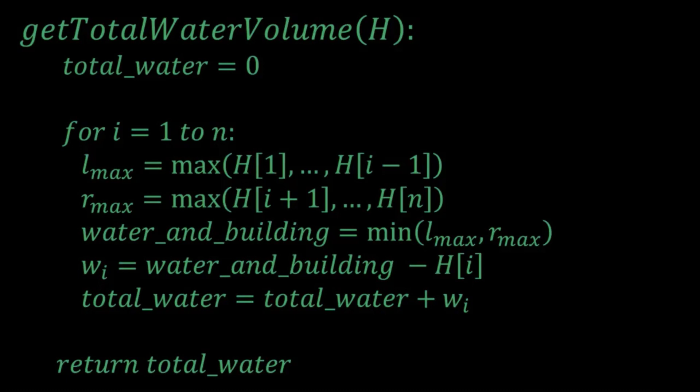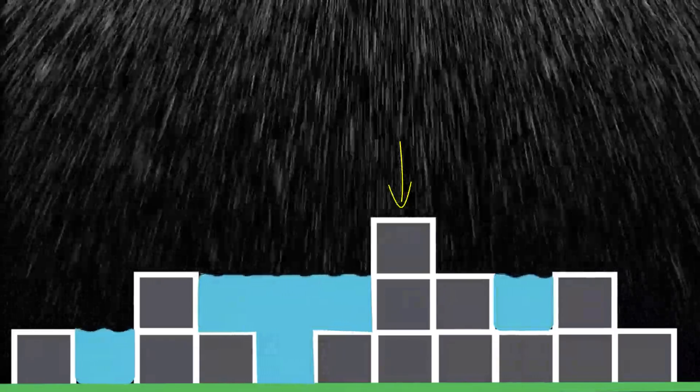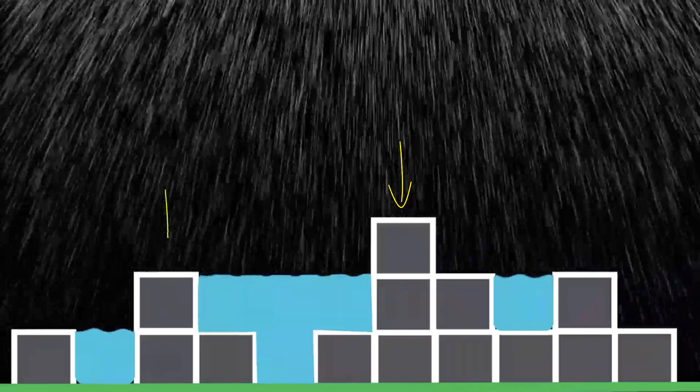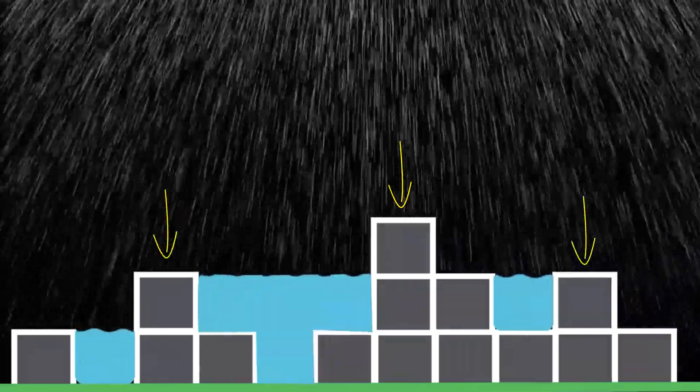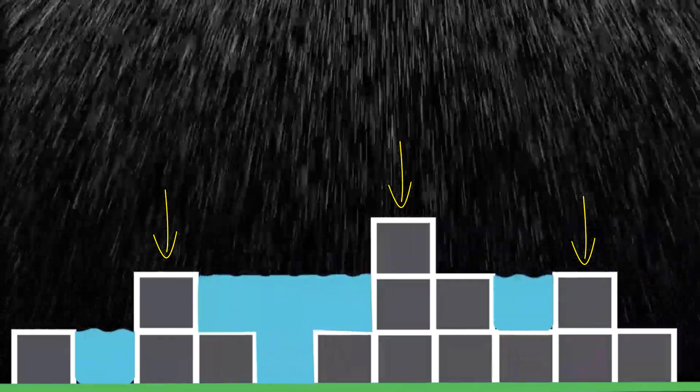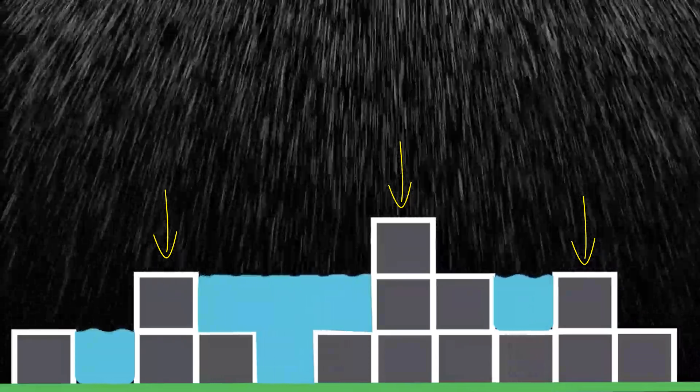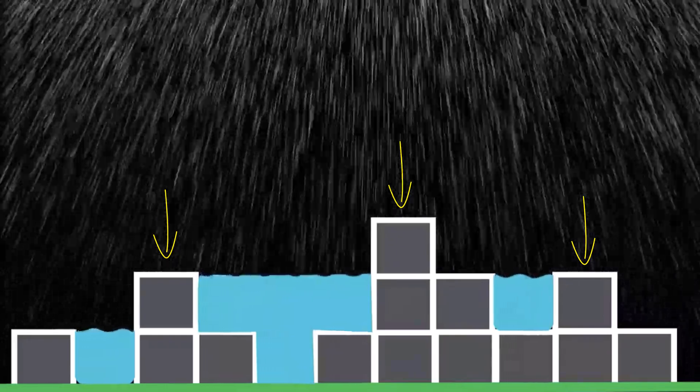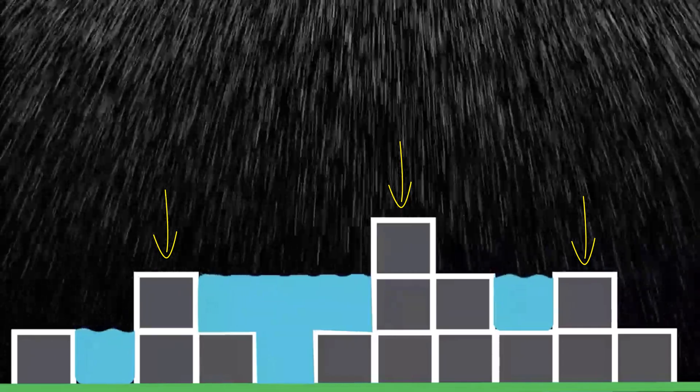However, this is not quite true. For example, let's take the eighth index. You can see that the maximum to its left is 2 and the maximum to its right is 2. Taking the minimum of both, you get 2. So 2 minus the height of the building would give you negative 1 or negative water. This is not good as I'm sure you see why the concept of negative water doesn't really make any sense.